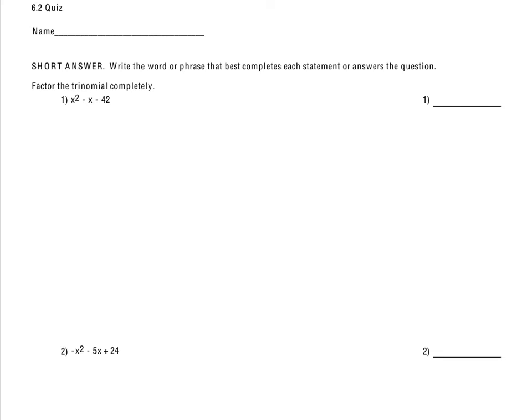We're going to look here at some factoring questions for the 6-2 quiz. Starting off with number 1, factoring x squared minus x minus 42. The pattern we're looking for is two numbers that have a product of negative 42 and a sum of negative 1.